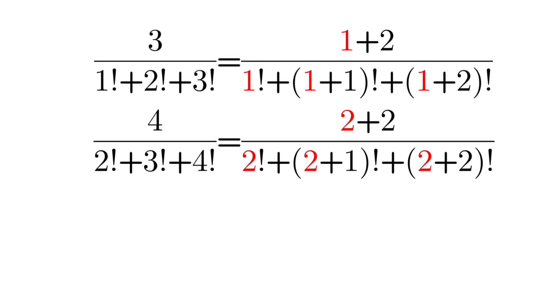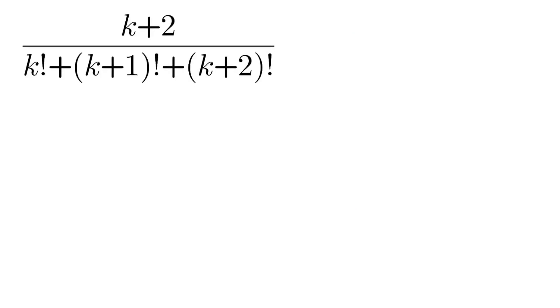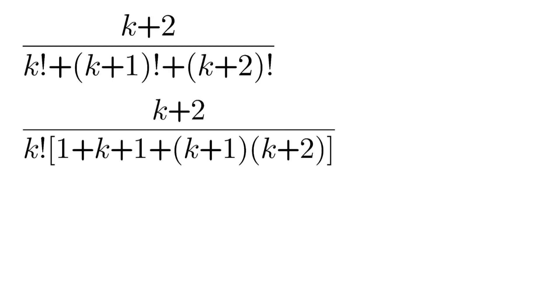In general, we can write in terms of k like this. Then solving the general case: (k+2) by k factorial plus (k+1) factorial plus (k+2) factorial. Now taking k factorial as common from the denominator.